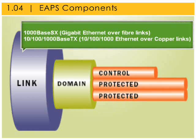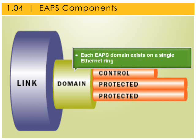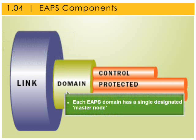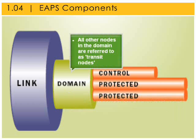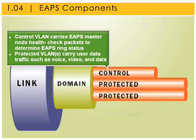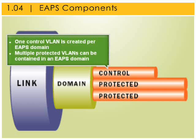EAPS runs on Gigabit Ethernet over fiber lengths and 10/100/Gigabit Ethernet over copper lengths. Each EAPS domain exists on a single Ethernet ring. Any VLAN that is to be fault-protected is configured on all ring ports, then assigned to an EAPS domain. Each EAPS domain has a single designated master node; all other nodes in the domain are referred to as transit nodes. The master node has a primary and secondary port. The control VLAN carries EAPS master health check packets to determine EAPS ring status, while protected VLANs carry user data traffic such as voice, video, and data.